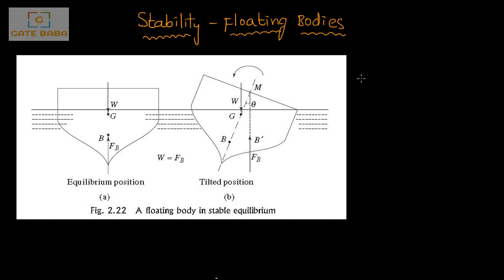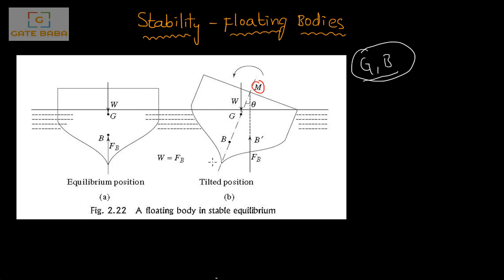It is not sufficient to express the stability condition by just knowing the locations of G and B. In the submerged condition, if we know G and B we can say whether it is stable, unstable, or neutral. But in floating conditions we can't determine stability directly by looking at G and B, because of the unequal displaced volumes. An extra parameter is needed — that parameter is called the metacenter, represented by capital M.